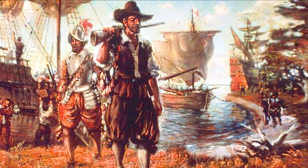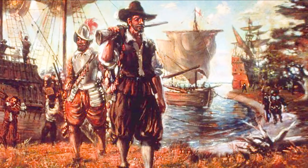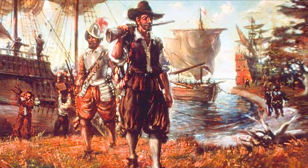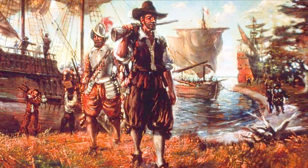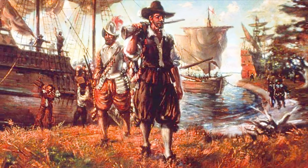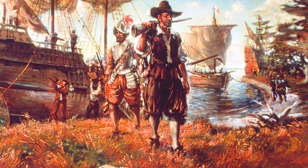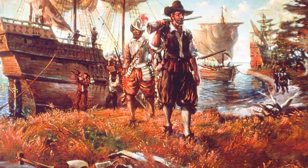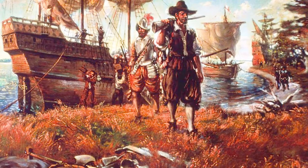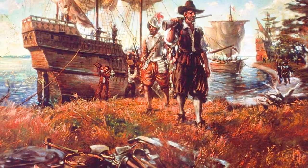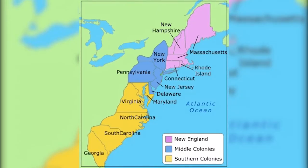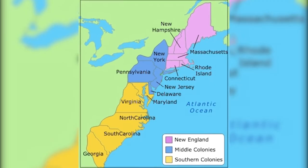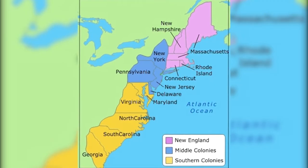Various European cultures came to be represented in England's American colonies, beginning with the first permanent settlement at Jamestown in 1607. Approximately 250,000 Europeans migrated to the colonies by 1700. By the outbreak of the American Revolution, the population of England's colonies in North America was approaching two and a half million.